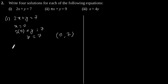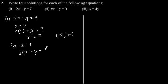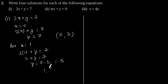Now let's find the second solution by putting x is equal to 1. We will get 2 into 1 plus y is equal to 7. This gives 2 plus y is equal to 7, which gives y is equal to 7 minus 2, which gives the value of y as 5. So (1, 5) is our second solution.